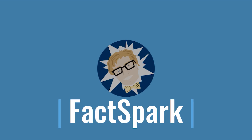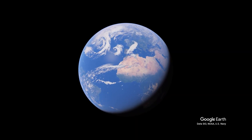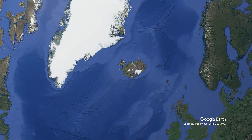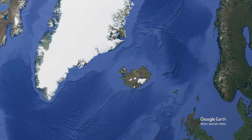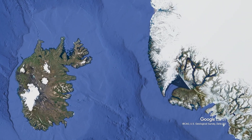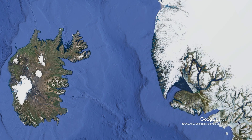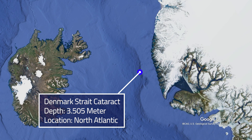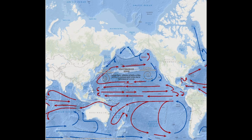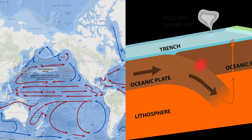Far up in the north, above the Arctic Circle in the Atlantic Ocean, hidden in the depths between Iceland and Greenland, lays the largest waterfall known to humankind. It is estimated that every single second, 5 million cubic meters of freezing Arctic water rush down the gigantic slope of a massive ocean ridge to form the largest underwater waterfall in the world — the Denmark Strait Cataract.